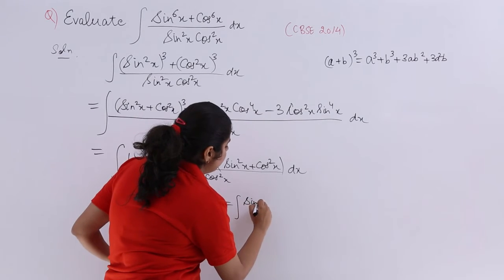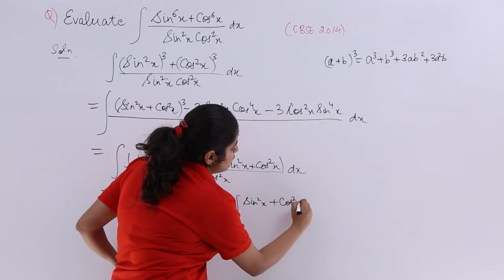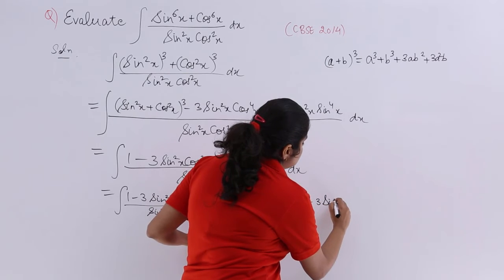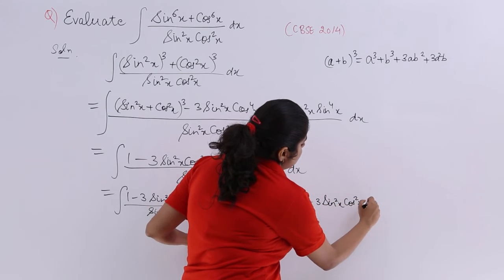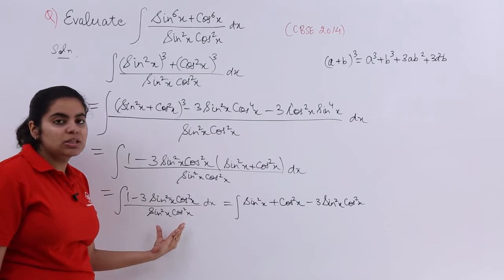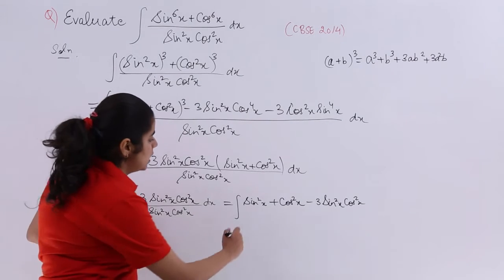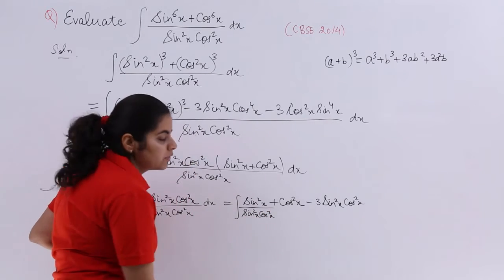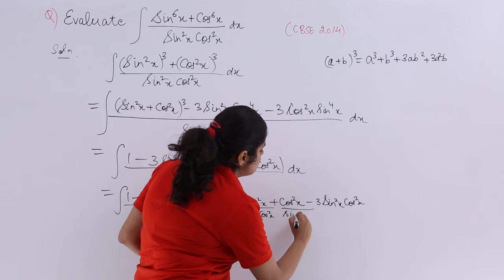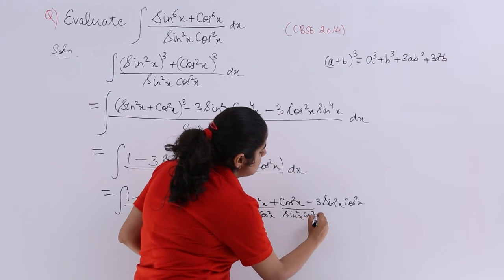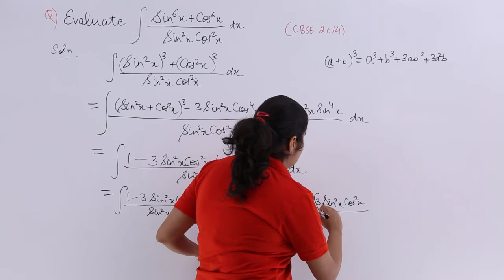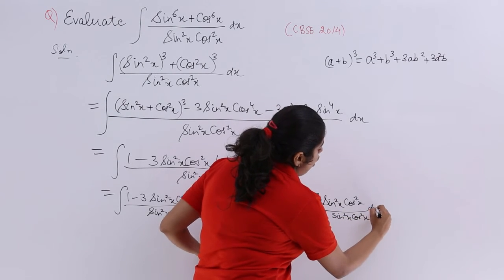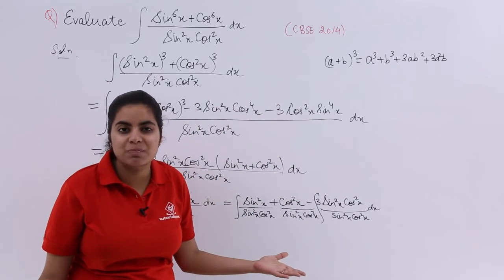Otherwise I won't be able to solve. So it is sin square x plus cos square x, then it is minus 3. Sin square x cos square x in the division, sin square and cos square in multiplication. So here also it has to be sin square x cos square x, here also it has to be sin square x cos square x, and in the last term also it has to be sin square x cos square x.